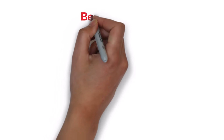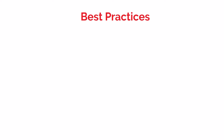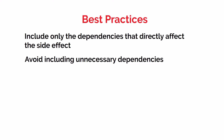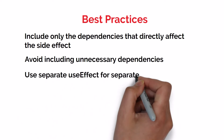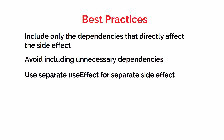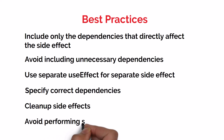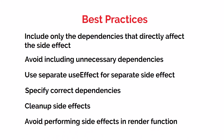Before we close, let me share some best practices for useEffect. Always include only the dependencies that directly affect the side effect — avoid unnecessary dependencies as they cause unnecessary re-renders. It is good to use multiple useEffect hooks within a single component, to separate different concerns logically and independently manage when they run. Bundling multiple side effects into a single useEffect can cause unintended side effects. Always specify correct dependencies, clean up side effects where necessary, and avoid performing side effects directly in the render function. Understanding these pitfalls helps you write cleaner and more efficient React components.